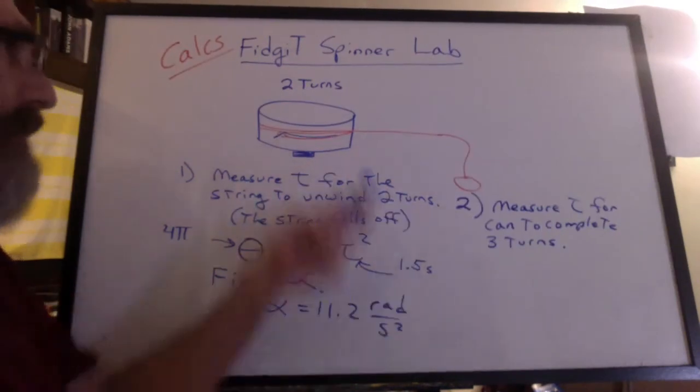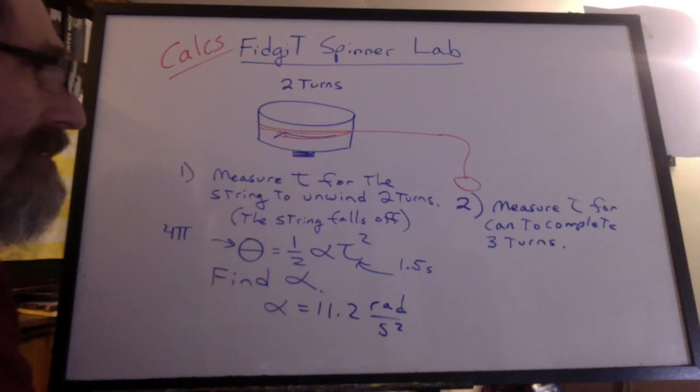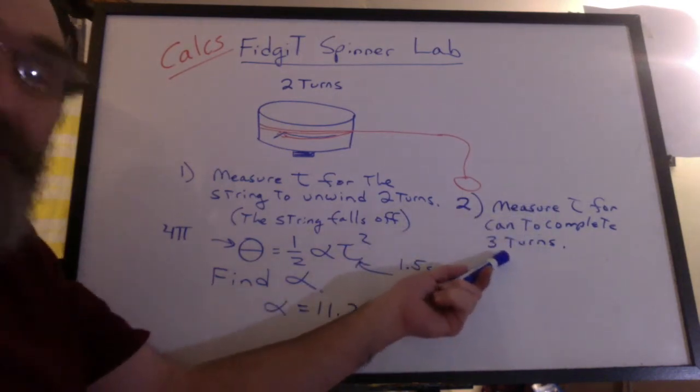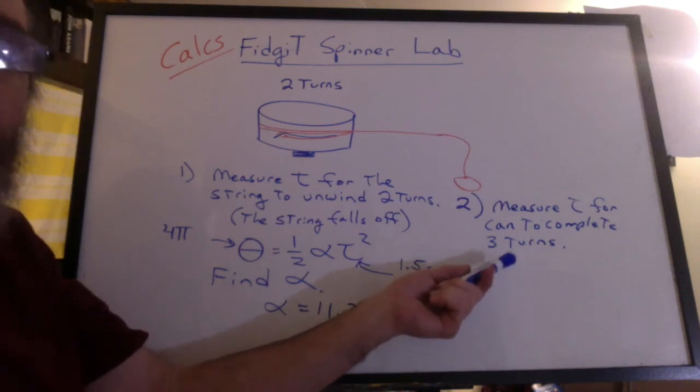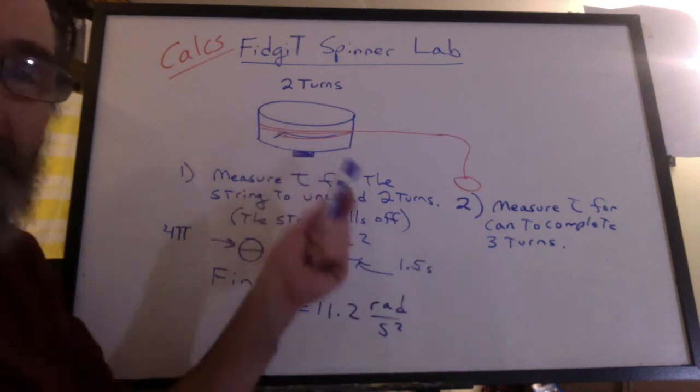Well, now the weight has fallen off and this thing is just spinning. You've reached the maximum angular velocity. So you want to measure the time for the can to complete, say, three turns. Oh, you could do two turns. You could do four turns. Don't do 10 turns because in that amount of time, this thing's going to start to slow down.